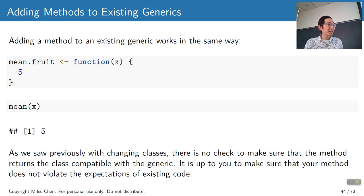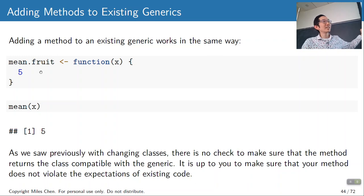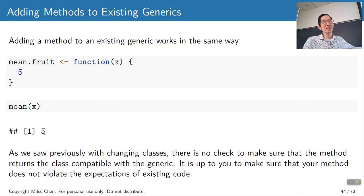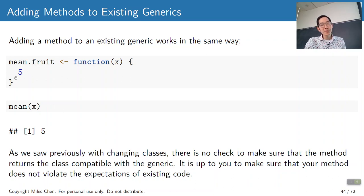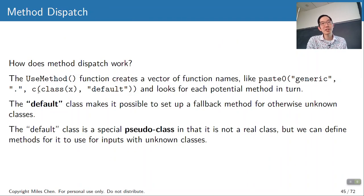Here's an object of class fruit. If I call quotation(x), R sees quotation is a generic with UseMethod, so it searches for quotation.fruit and returns the quote. You can also add mean.fruit — even though it's silly, if you say mean(x) on a banana object, R searches for mean.fruit, finds it returns five, and tells the user five. The way it works: take the name of the generic function, add a dot, tack on the class name — if found, execute it.